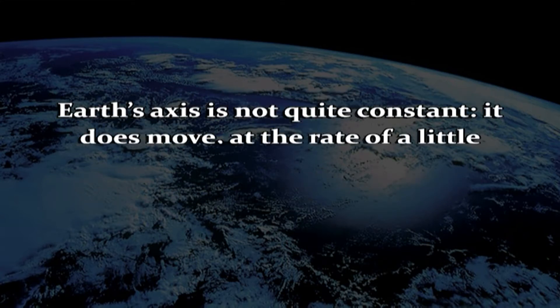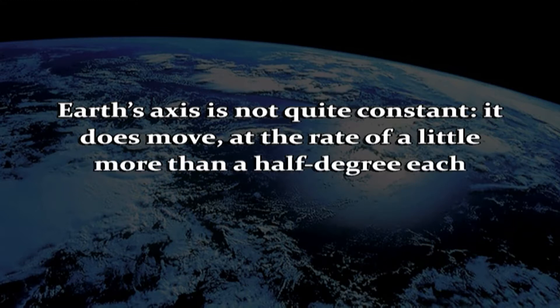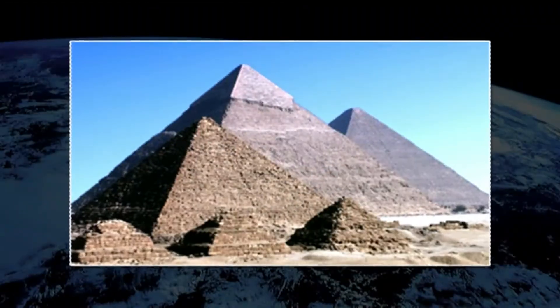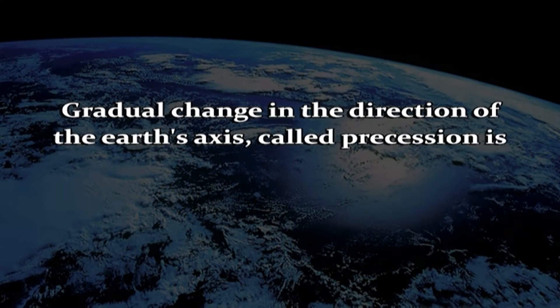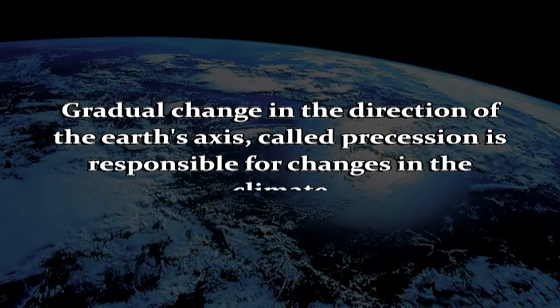The axis of the earth is not quite constant. It does move at the rate of a little more than half a degree each century. So Polaris has not always been and will not always be the star pointing to the north. When the pyramids were built around 2500 BC, the pole was near the star Thuban, also known as Alpha Draconis. This gradual change in the direction of the earth's axis, called precession, is responsible for changes in the climate.